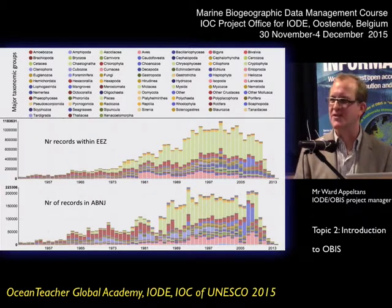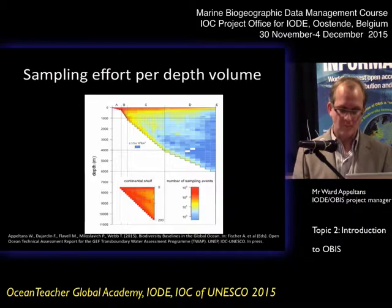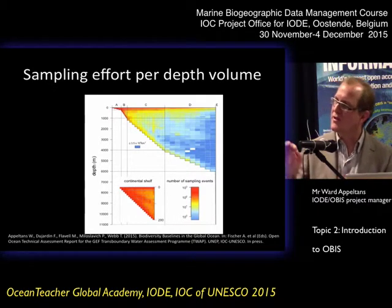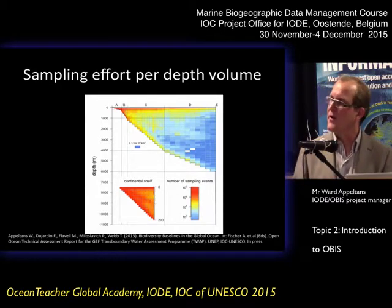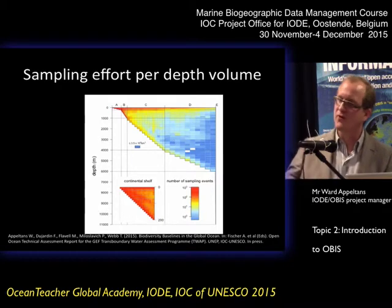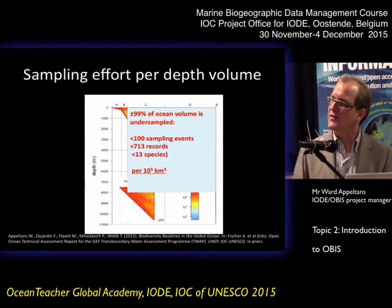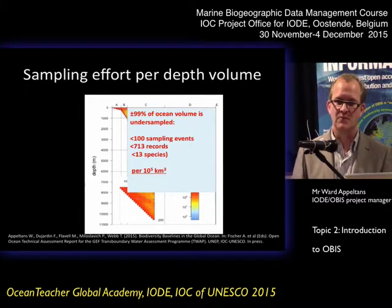Even though the open ocean is 50% of the planet, we don't have a lot of information from that part of the world. In terms of sampling effort per depth volume, if you squeeze the ocean into a 2D dimension, so every square actually represents volume in the ocean, you can see that the majority of the records is from the surface and from the continental shelf. So it actually means that for 99% of the ocean volume, we have less than 100 sampling events, less than 700 records, and less than 13 species per 10,000 kilometers.